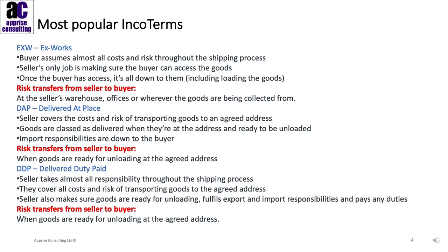These are three of the most popular Incoterms. The first one is Ex Works. Here the buyer assumes all costs and risk throughout the shipping process. The seller just has to make the goods available at their premises. This means the buyer is also responsible for loading the vehicle, which isn't always clear to everyone. So in an example where the seller loads the vehicle as they normally would and damages the product, it's still the buyer's responsibility unless they've come to a separate agreement. The risk transfers from seller to buyer at the seller's warehouse, offices, or wherever the goods have been collected from — for example, a 3PL warehouse.